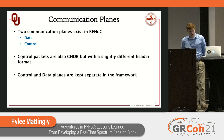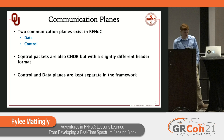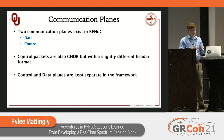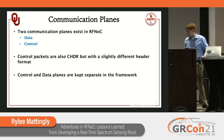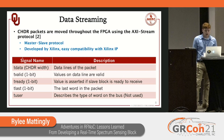There are two communication planes in RFNOC: a data plane and a control plane. The control packets are also CHDR packets with a slightly different header format. As you would expect, the control and data planes are kept completely separate in the framework, and they are optional for each block. We actually don't discuss much about the control plane, as we didn't really take advantage of that.